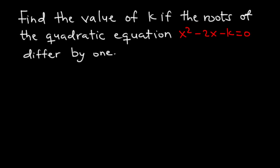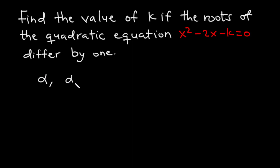In today's video, we are going to find the value of k if the roots of the quadratic equation x squared minus 2x minus k equals 0 differ by 1. If the roots differ by 1, it means one root is greater than the other by 1. So let's say the first root is alpha and the second root is alpha plus 1.